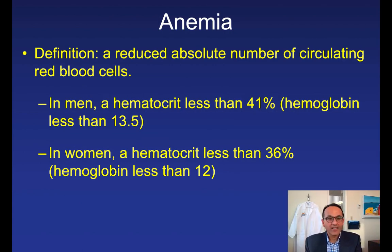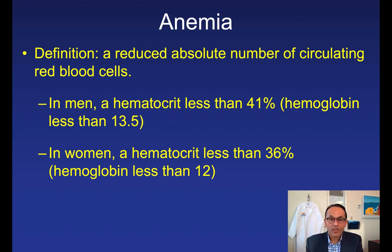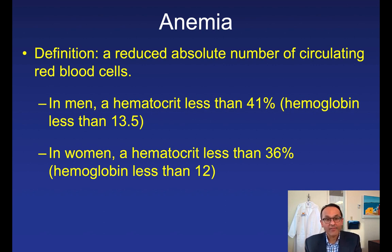So first let's define anemia. It's defined as a reduced absolute number of circulating red blood cells. In men, a hematocrit less than 41% defines anemia, or if you prefer to use hemoglobin — which is roughly a third of the hematocrit — it's a hemoglobin less than 13.5. In women, it's a hematocrit less than 36% or a hemoglobin less than 12.